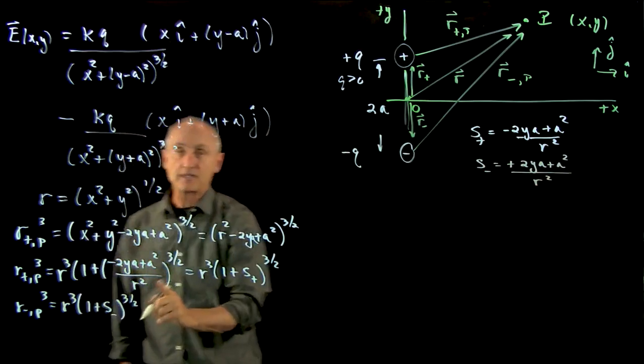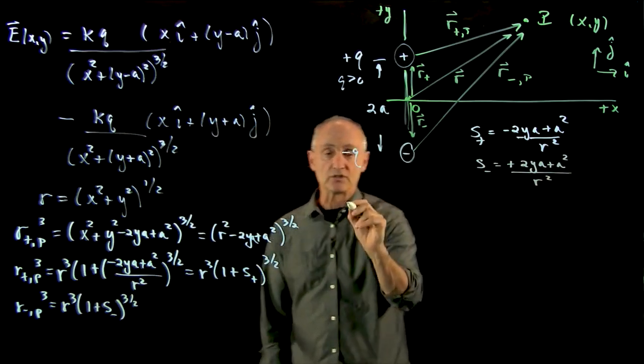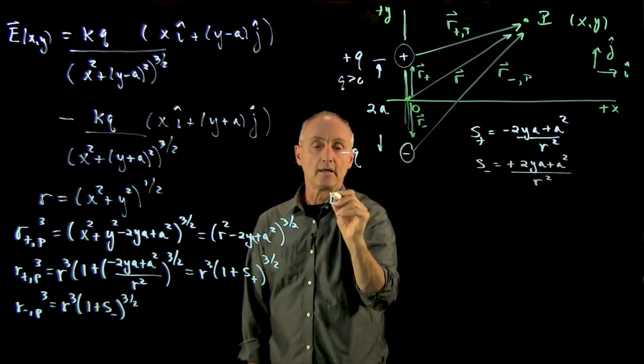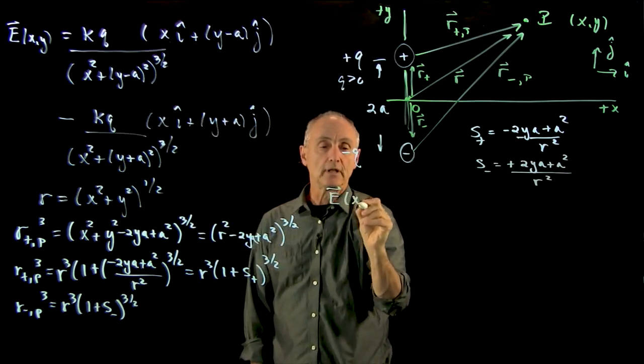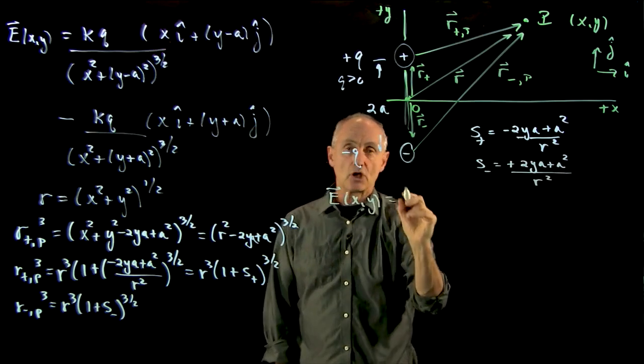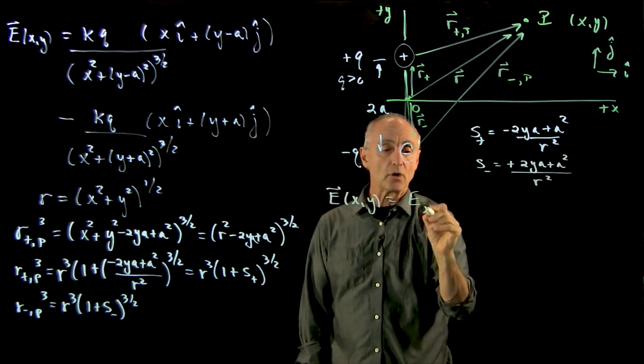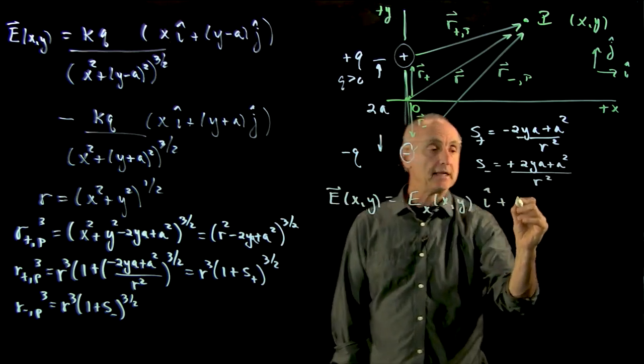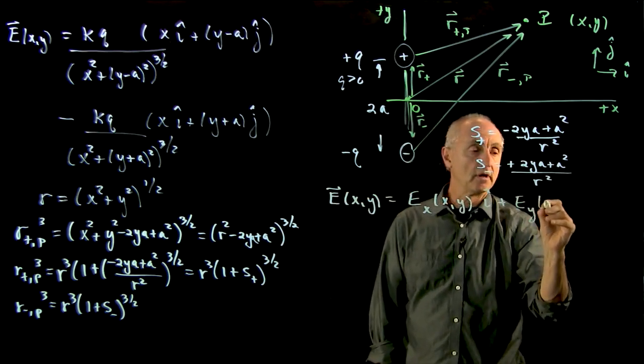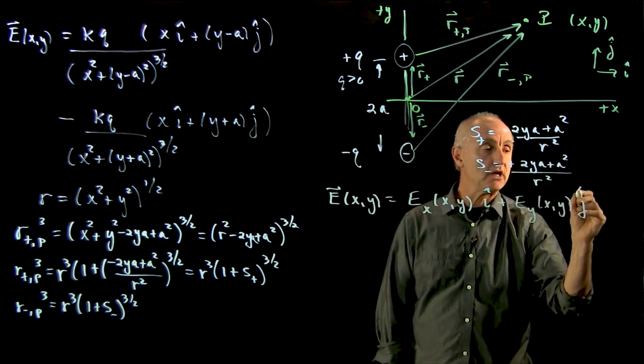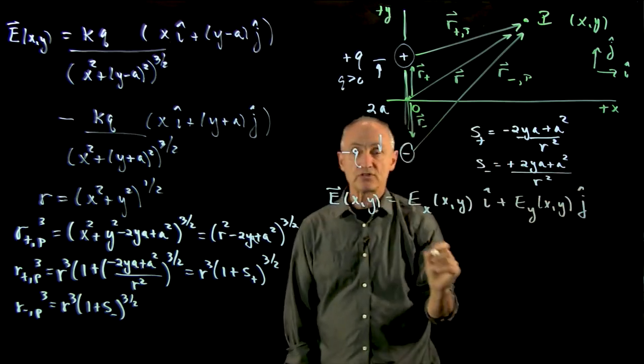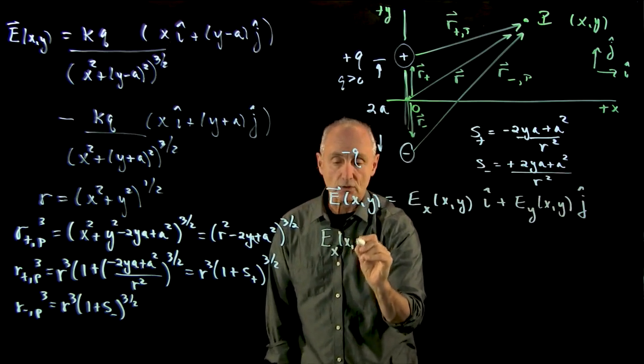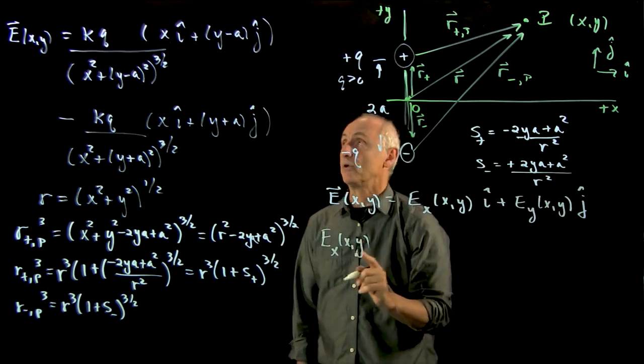And that's the first step in setting up our expansions. But now what I'd like to do is I'd like to write my electric field as a vector field. So it has an x component function and a y component function. And I'd like to treat each of these component functions separately and get expressions for them. So let's start with the x component function.